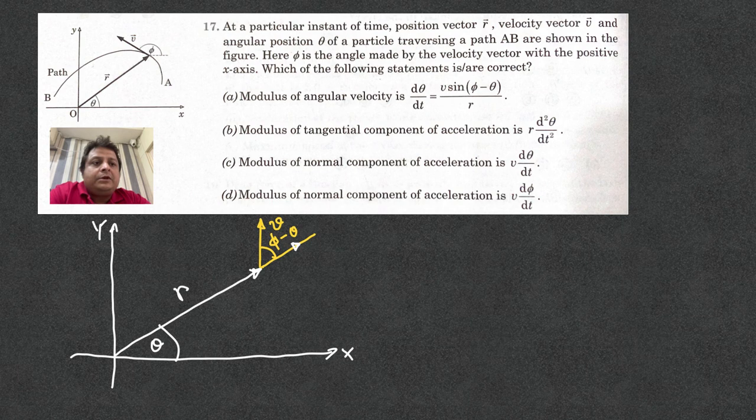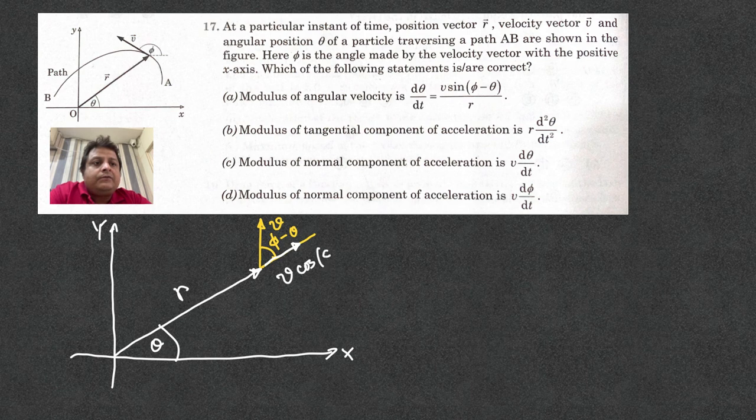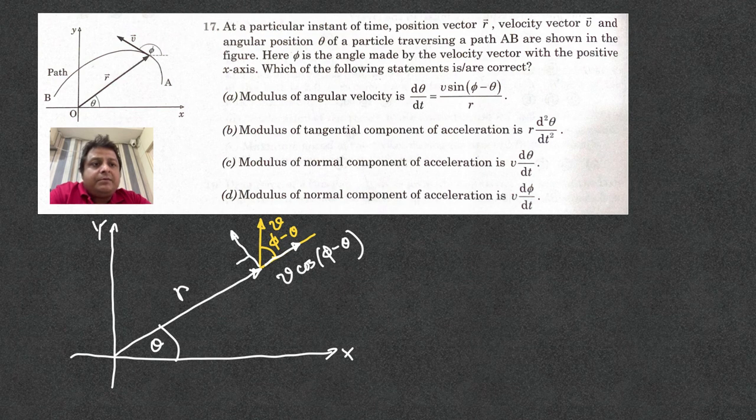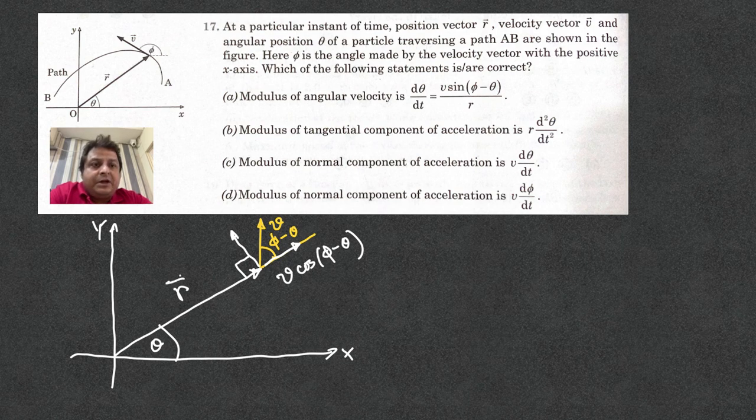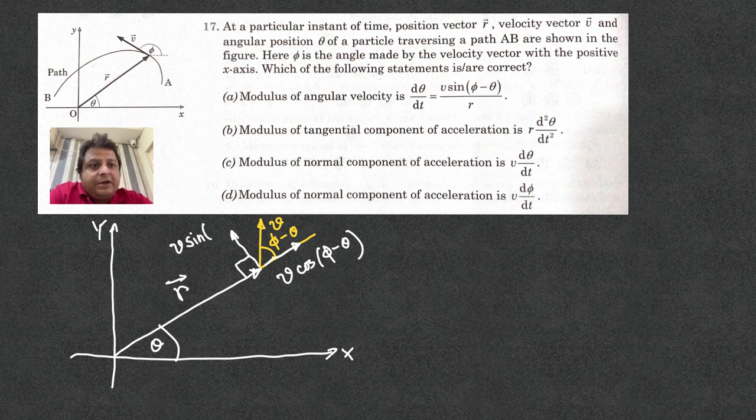So, it has two components as you know. The radial component is v cos of phi minus theta and the normal component perpendicular to r. Let us keep r vector. So, this happens to be v sine of phi minus theta.